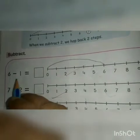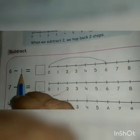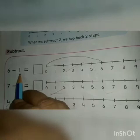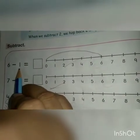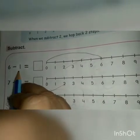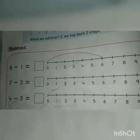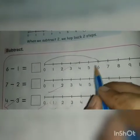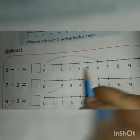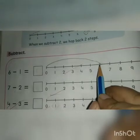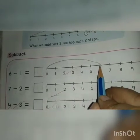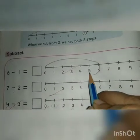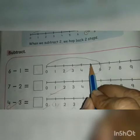Means taking away or going back. Now look at the next number. Which number is this? This is number 1. Now we will go one step back. Hamaar last number kohon sa tha? 6. Ab hum yahaan se one step back jayenge. Okay. One step.